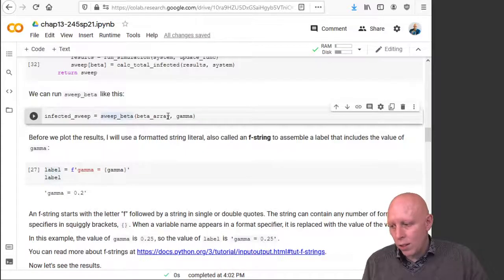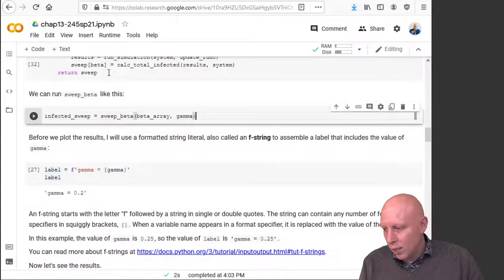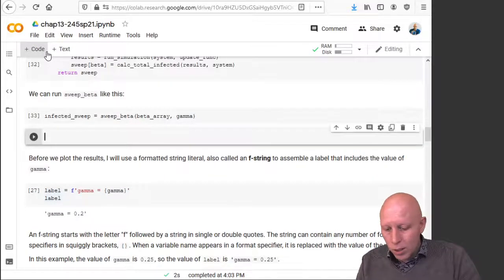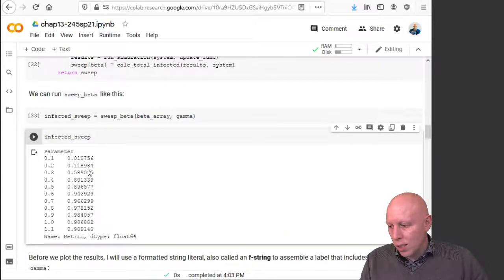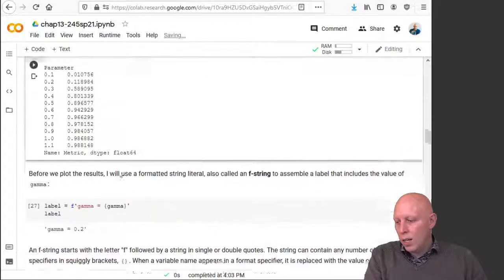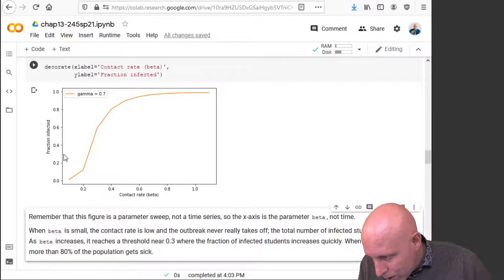We can run this with the beta array that we defined above with the gamma that we care about. And now this infected underscore sweep is the object that's collecting that information. So if we ask what is infected sweep, we get different parameters give us different percentages of the population that gets sick. Let's plot this. When we plot this, we see a chart and we also see that we want there to be about 30% of the population that got infected. So that's a number that's between 0.2 and 0.3.